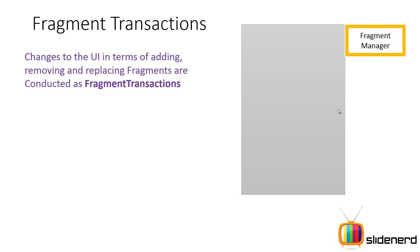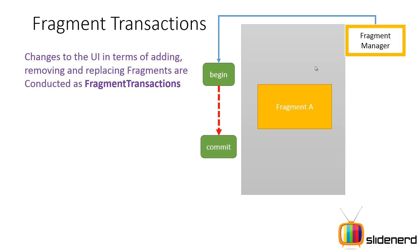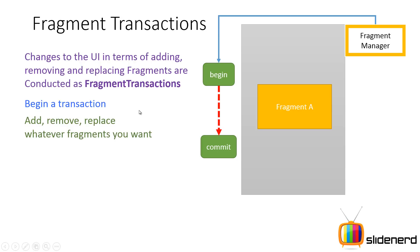Let's see how the transactions work. You have an activity with its own fragment manager. The fragment manager begins a transaction. Once the transaction has begun, you can add, remove, replace — whatever you want. Then when you commit the transaction, the user sees all the changes. So: begin a transaction, add/remove/replace stuff, and then commit the transaction — that's how things are performed.